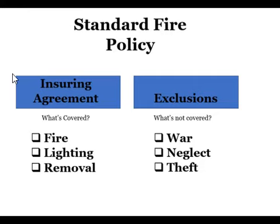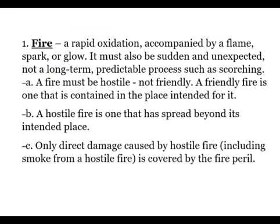Let me go over the three covered perils in a little more detail, starting with fire. Fire is a rapid oxidation accompanied by a flame, spark, or glow. It must also be sudden and unexpected — not a long-term predictable process such as scorching.